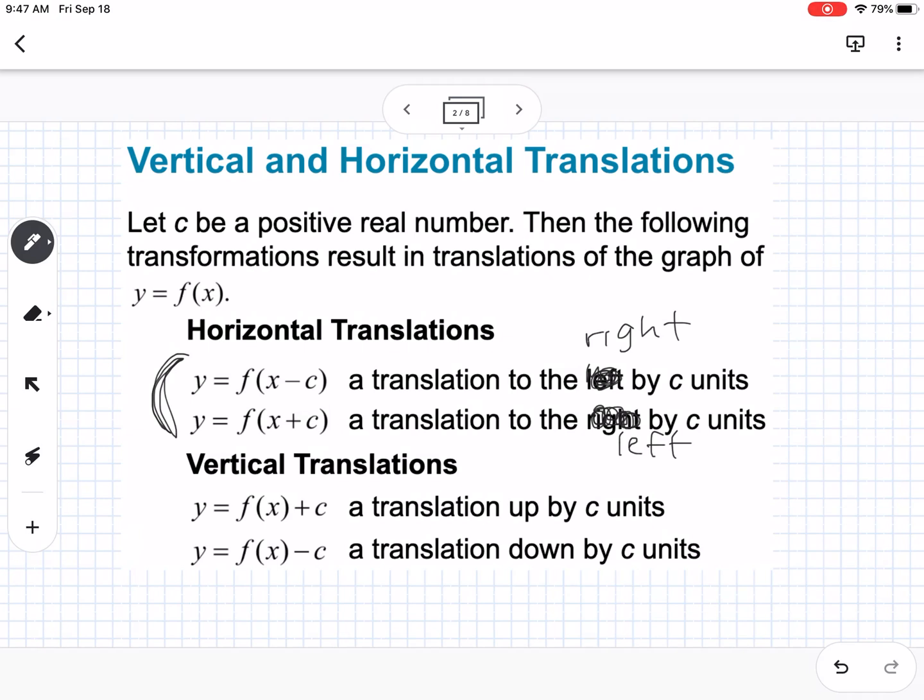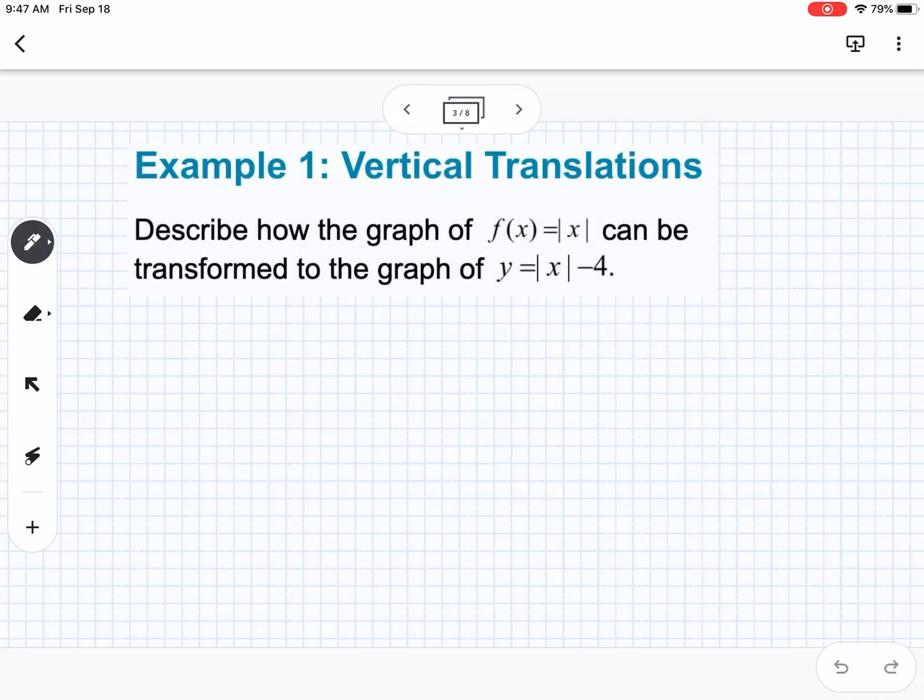Okay, vertical translations, if we're going, if we have a plus c on the outside, we're moving it up c units. If we have a minus c, we're moving it down by c units.